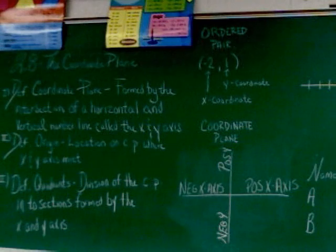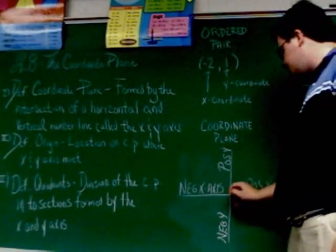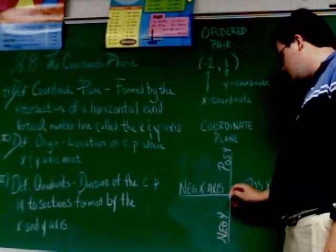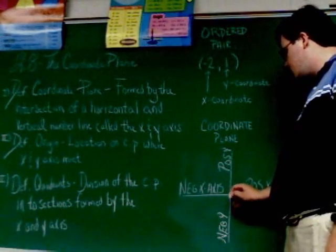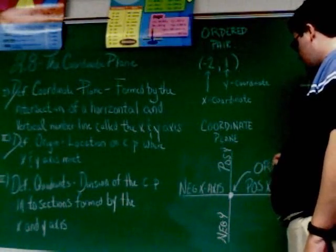There are some other points or other parts of the coordinate plane that have to be labeled though. The second definition over there was the definition of the origin. That's where the two cross bars meet. So that's going to simply be this point right here dead center is the origin.